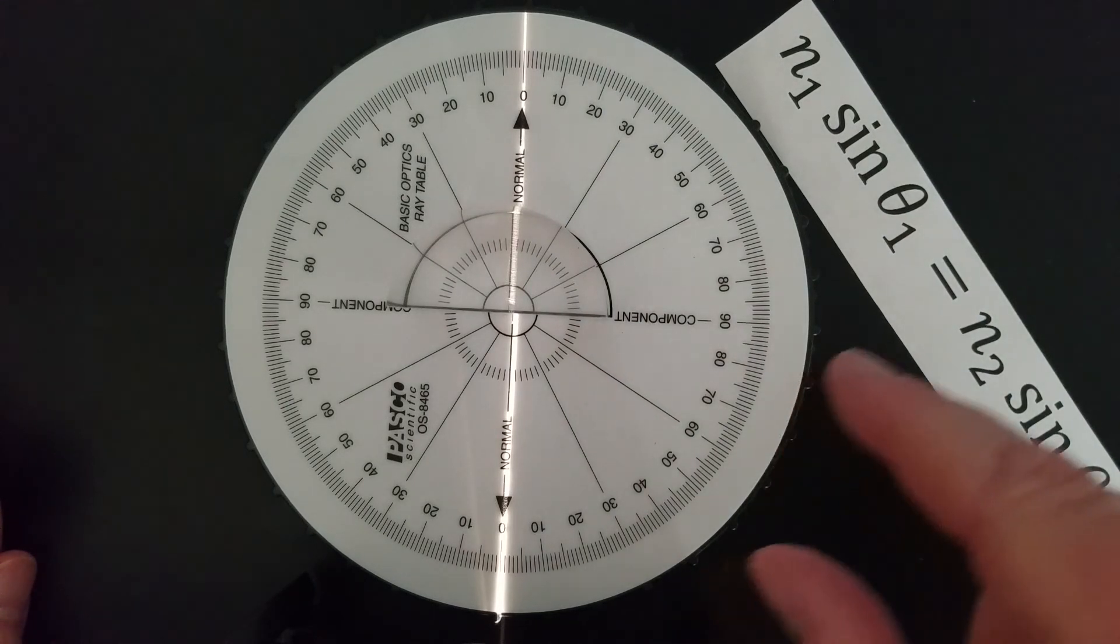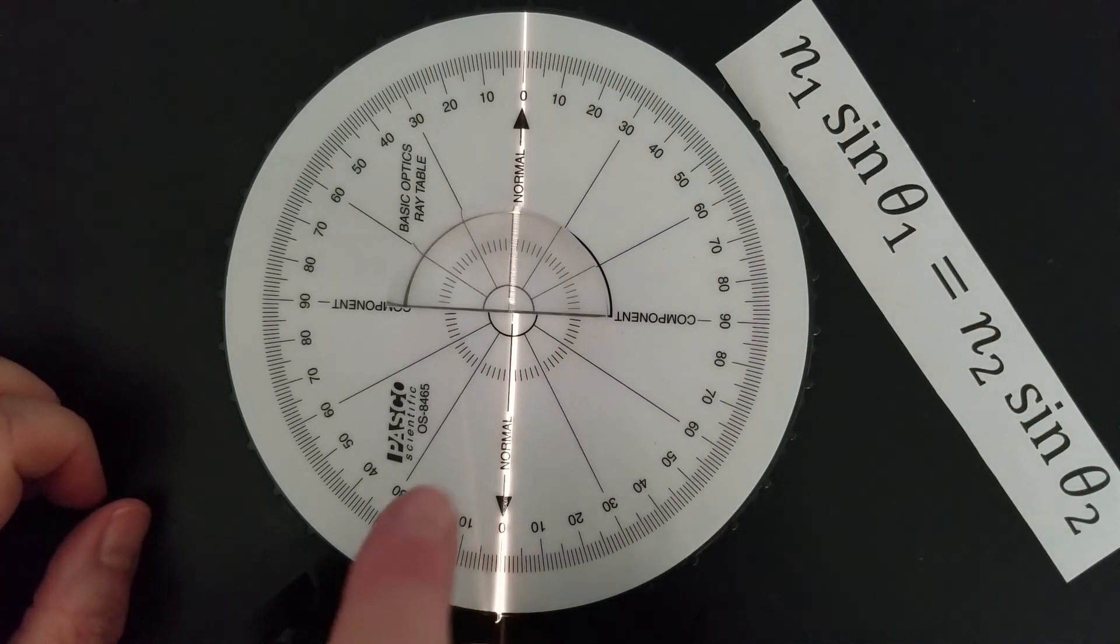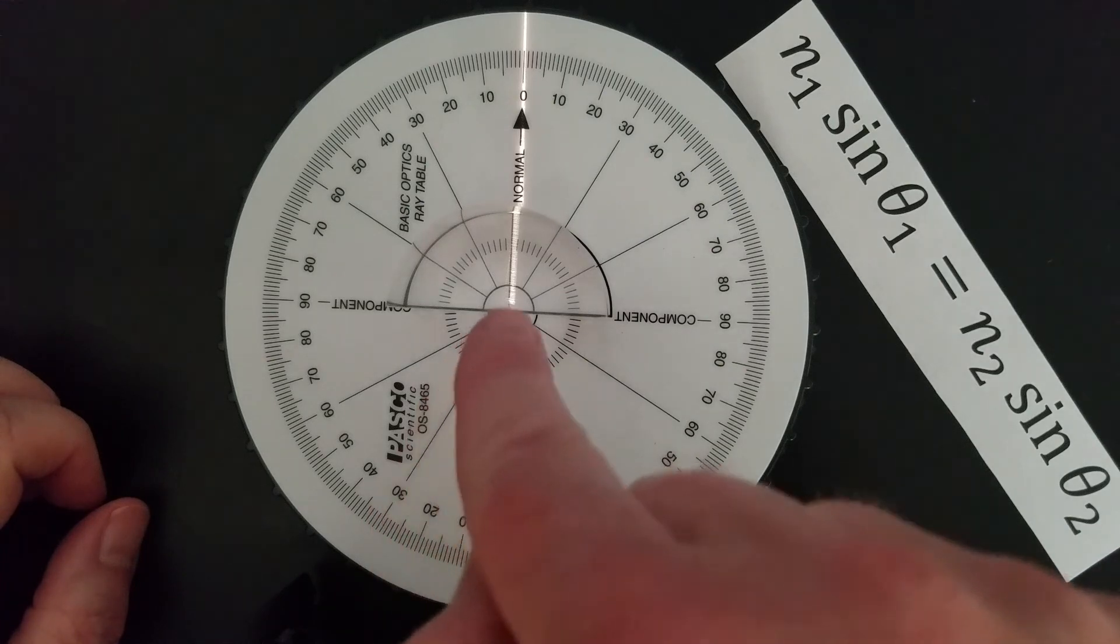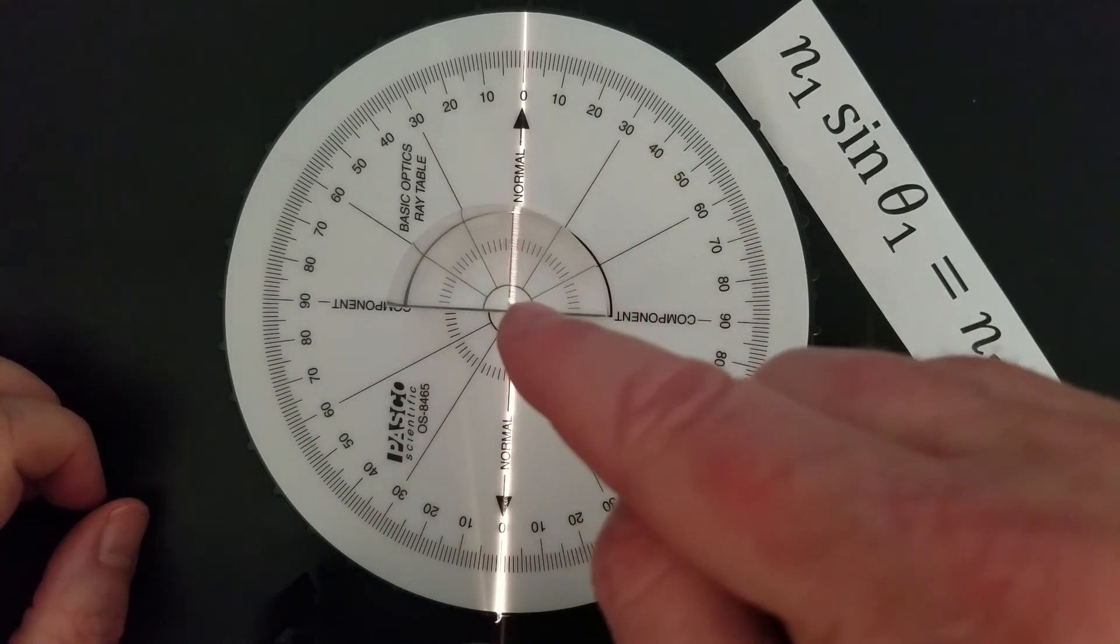So what I'm going to do is I'm going to rotate this so we can get different angles of incidence. And the angle of refraction is at this point right here where the light makes contact with the plastic.